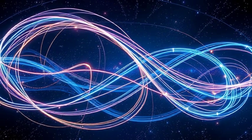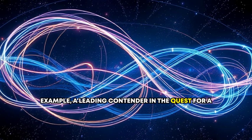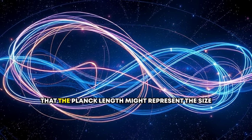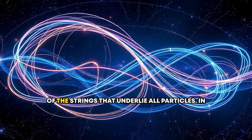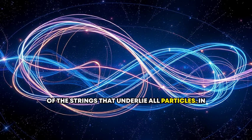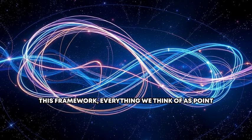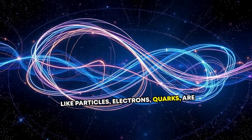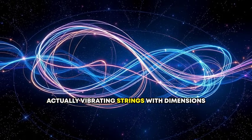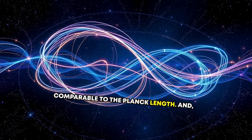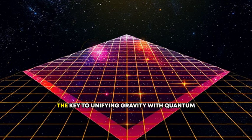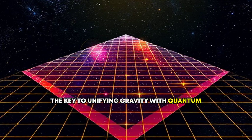Take string theory, for example, a leading contender in the quest for a theory of everything. String theory suggests that the Planck length might represent the size of the strings that underlie all particles. In this framework, everything we think of as point-like particles—electrons, quarks—are actually vibrating strings with dimensions comparable to the Planck length. And, intriguingly, these strings might also hold the key to unifying gravity with quantum mechanics.